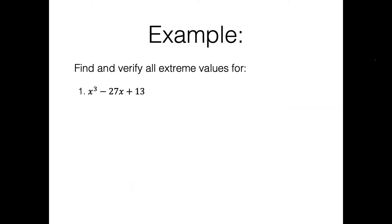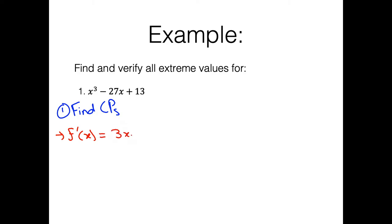Let's run through an example. We want to find and verify all extreme values for that function. The first step is the same as always — we find our critical points. We take the first derivative using the power rule to get 3x² − 27, set that equal to zero, and solving gives us x² = 9, so x = ±3. We have two critical points for this problem.